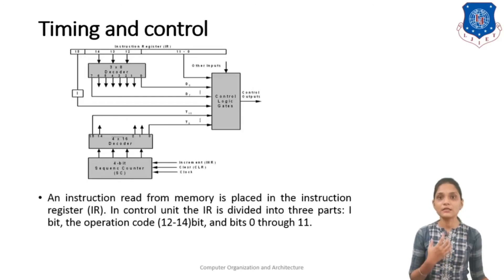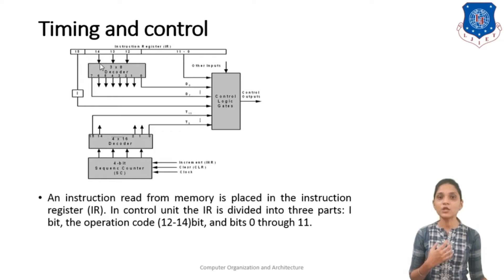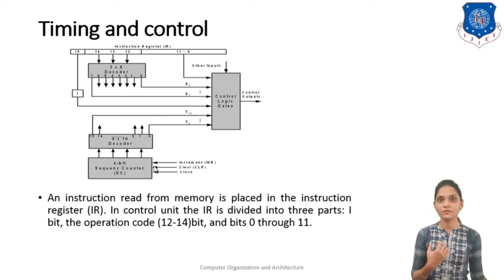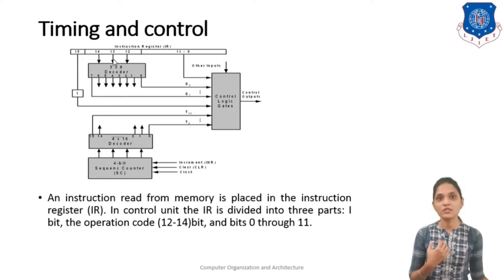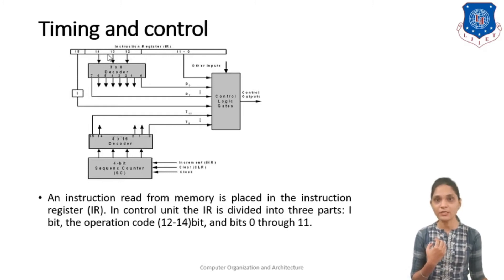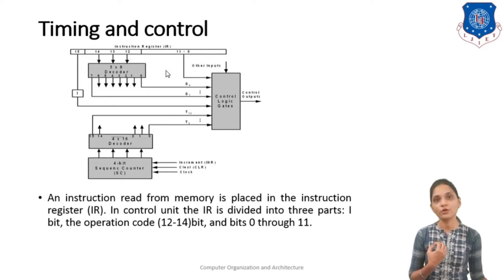The instructions read from the memory are placed in the Instruction Register, that is the IR register shown over here, and the control unit. In the control unit, the IR instruction is divided into 3 parts. The first part is bits 12, 13, and 14, which are the operation code, and the rest of the 12 bits, bits 0 to 11, are for the address.